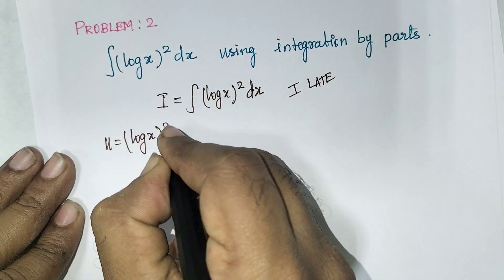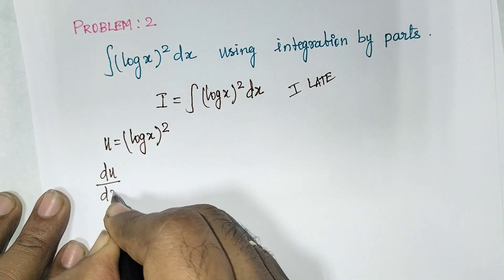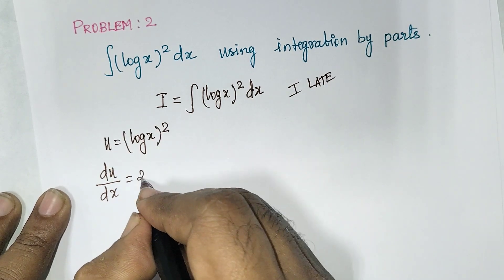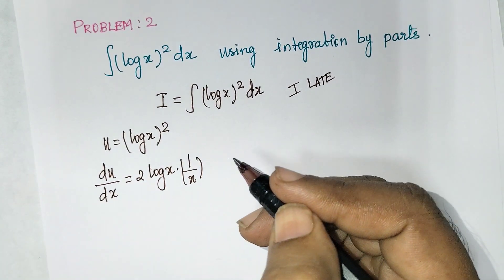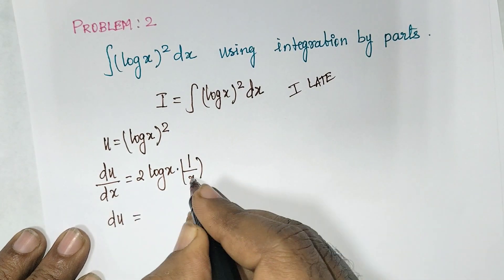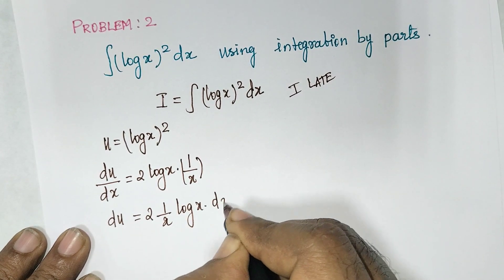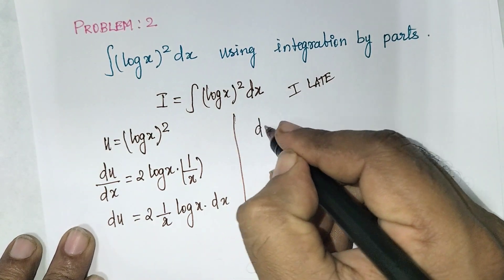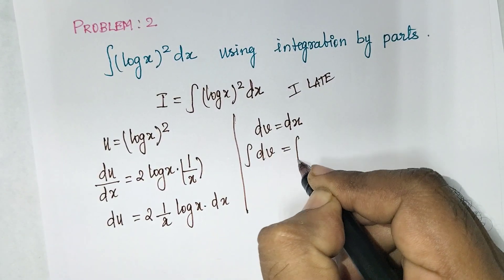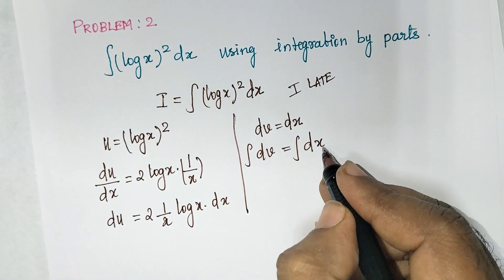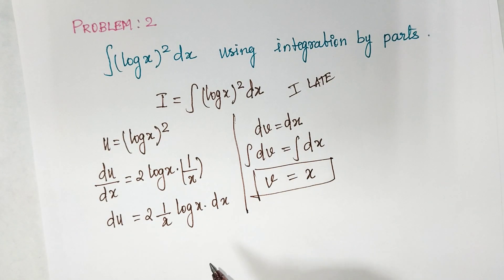Differentiate u: du/dx equals 2·log(x)·(1/x), so du equals 2·(1/x)·log(x)·dx. The remaining term gives dv equals dx. Integrating both sides, v equals x.